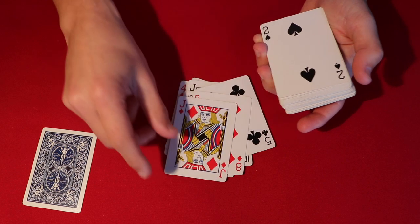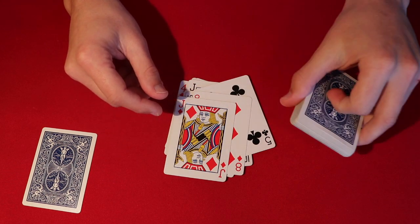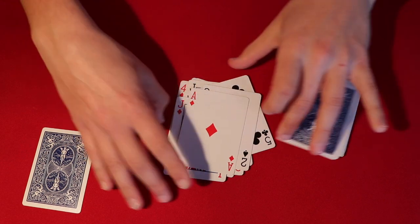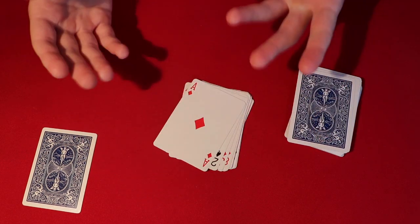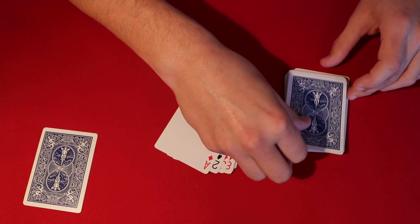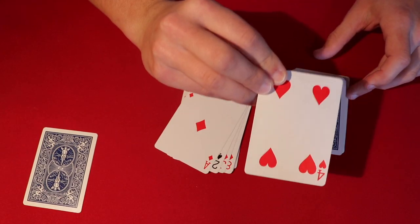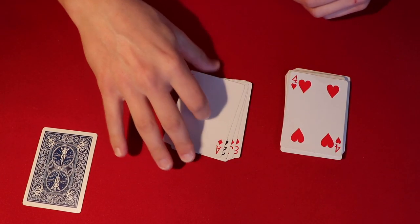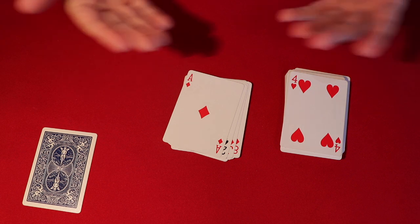And as soon as they say stop, just flip the left hand over and put the deck down. So let's say they say stop. You say, look, so you could have stopped me anywhere you wanted to at this point. You've already flipped over this deck, which is going to allow you to flip over the four, which is on top. So you flip that over. You say, okay, cool. So you happen to stop me at the four.